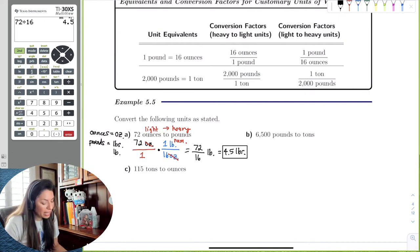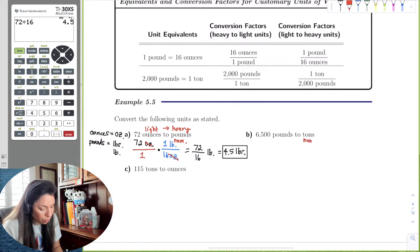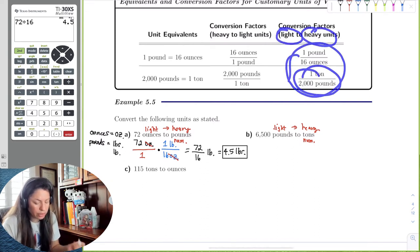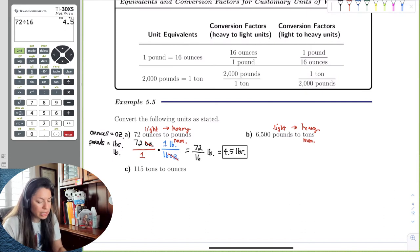So next, part B says, let's go ahead and convert 6,500 pounds to tons. So I do know that if I'm going to tons, I need this in the numerator. So I automatically see tons in the numerator, I know I'm going to use that one in that second column. Or I could look at it as I'm going from light to heavy, and know that I'm going to use this column with tons and pounds in it.